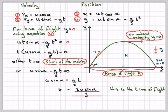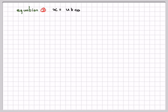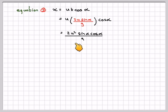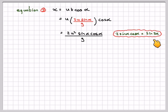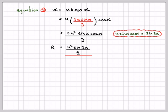To get the range of flight, substitute the time of flight into equation 3: x = u·t·cos(alpha) = u·(2u·sin(alpha)/g)·cos(alpha) = 2u²·sin(alpha)·cos(alpha) / g. Since 2·sin(alpha)·cos(alpha) = sin(2α) from pure mathematics, the range is u²·sin(2α) / g.